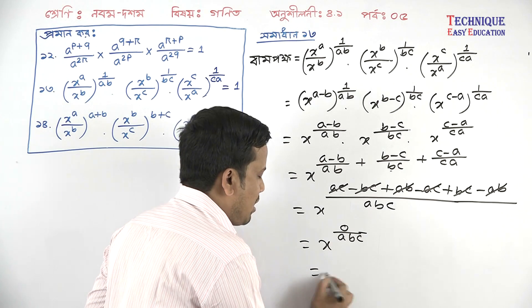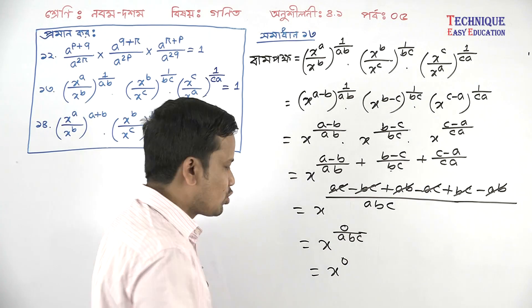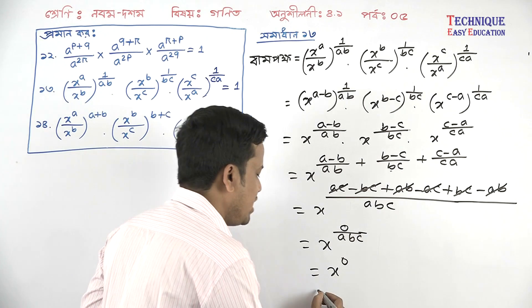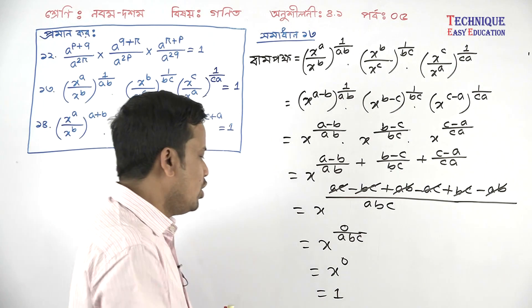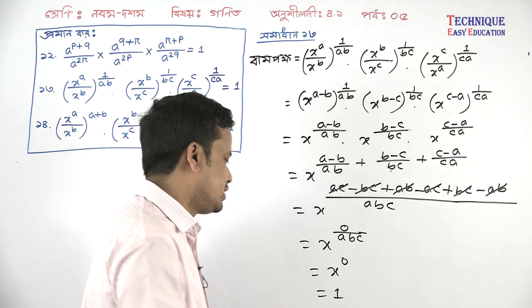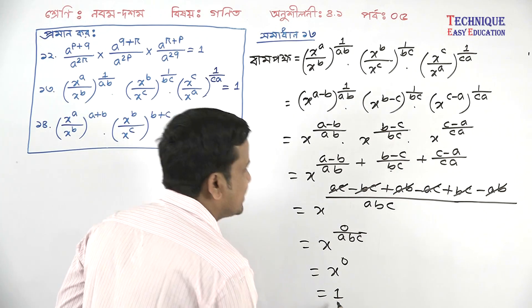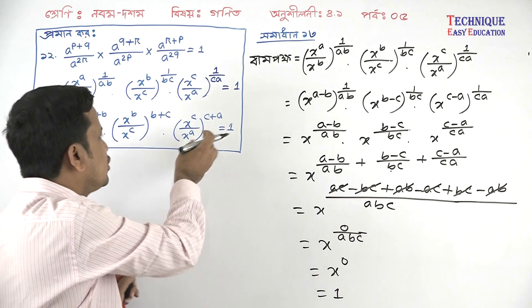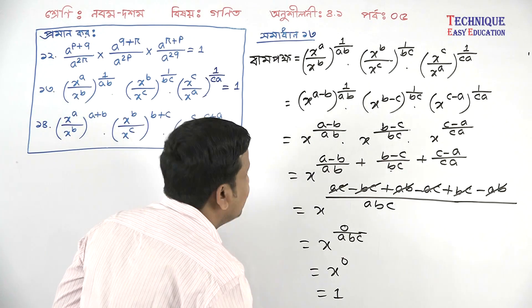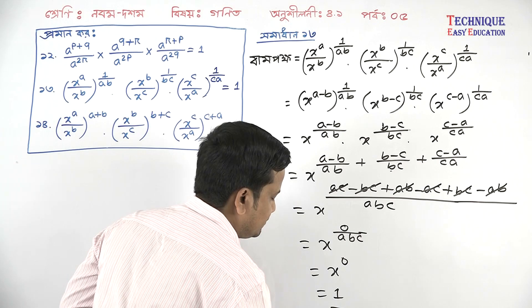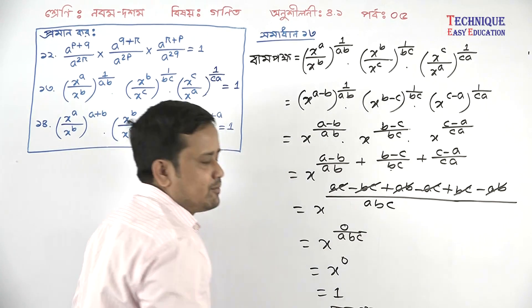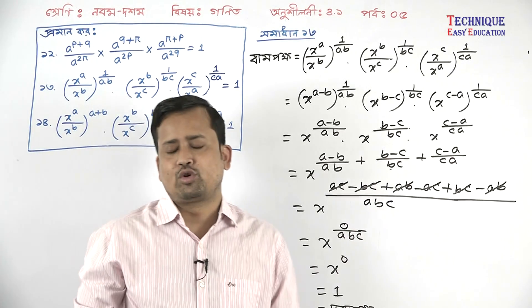So X to the power 0 equals 1. X to the power 0 is 1. So we get 1. Therefore the entire expression equals 1, which is what we needed to show.